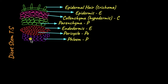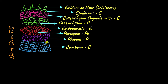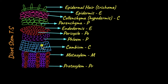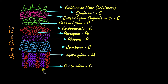First we have phloem. Below the phloem in dicots is a layer of cambium, which is involved in the formation of secondary xylem and phloem, and is therefore located between phloem and xylem. In cambium, the cells look rectangular under the microscope. For xylem, the metaxylem is closer to the cambium and is wider, while the protoxylem is farther from the cambium and is narrower. The last tissue in dicot stem is the pith.